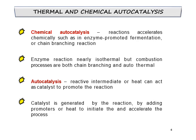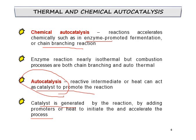Thermal and chemical autocatalysis is also another type of oxidation reaction that uses the concept of chain reaction. For chemical autocatalysis, examples of reactions may be enzyme-promoted fermentation or chain branching reactions. Autocatalysis involves a reactive intermediate that can act as a catalyst to promote the reaction. The catalyst is generated by the reaction by adding promoters or heat to initiate and accelerate the process. Autocatalysis and chemical autocatalysis are also types of auto-oxidation reactions that use the concept of chain reaction.